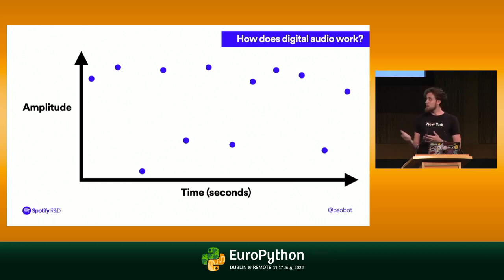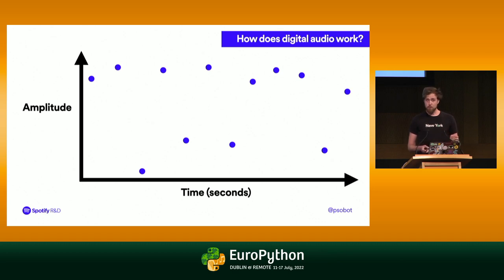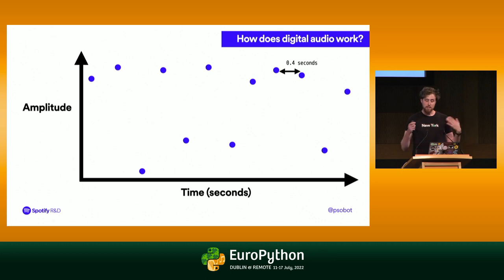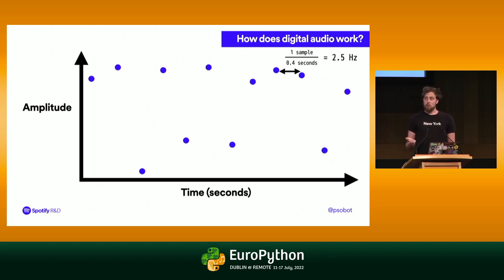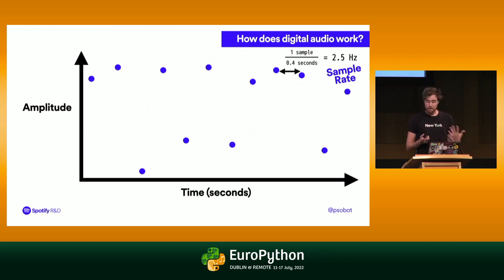We've got a bunch of points on the screen. There's not too many of them and they're not very detailed. We've recorded the position of the microphone at various points in time. I was pushing the button roughly once every 0.4 seconds. If we take the reciprocal of that, we get a value in hertz — our unit for frequency. That value of 2.5 hertz is what we call our sample rate: this is how often we sample the microphone and figure out where it is at that point in time.